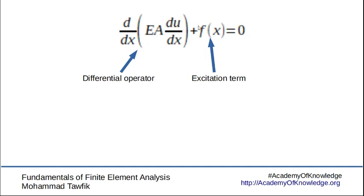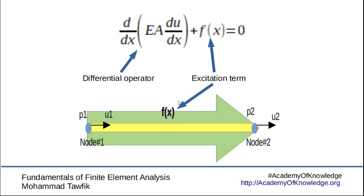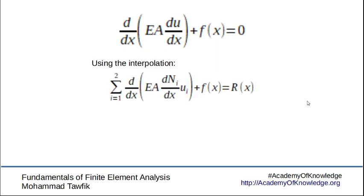The excitation term here, f(x), is a forcing function that acts on the surface of the bar. Maybe it's due to some loading like gravitational force or any other kind of field, or maybe just some shear function applied on the cells.